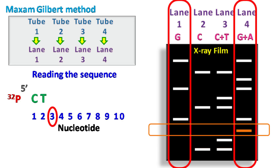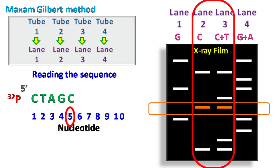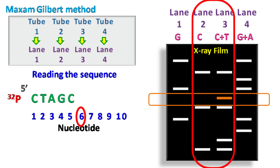Lane 4 has a single band representing G+A, but lane 1 representing G has no band, so the third nucleotide is A. Next, lane 1 and lane 4 both have bands: lane 4 represents G+A and lane 1 represents G, so the fourth nucleotide is G. Lanes 2 and 3 both have bands at the fifth position, so the fifth nucleotide is C. Finally, lane 3 has a single band representing C+T but lane 2 has no band, so the sixth nucleotide is T.